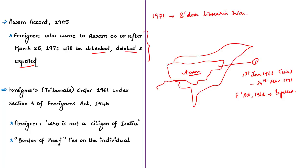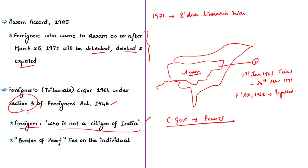Let us look briefly at the Foreigners Act of 1946. As per this act, a foreigner is a person who is not a citizen of India. The act provides wide-ranging powers to the central government to control the entry, exit, and movement of foreigners to and within India. Under Section 3 of this act, the central government issued the Foreigners Tribunals Order of 1964, and the tribunal's objective is to identify whether a person is a foreigner or not.